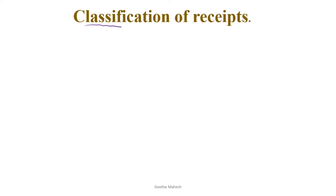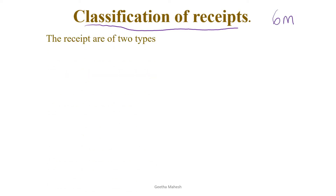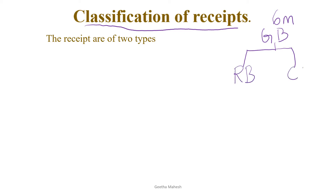Classification of receipts is important. Classification of receipts are of two types. This is the government budget. Government budget has two components: one is revenue budget, and this is capital budget.